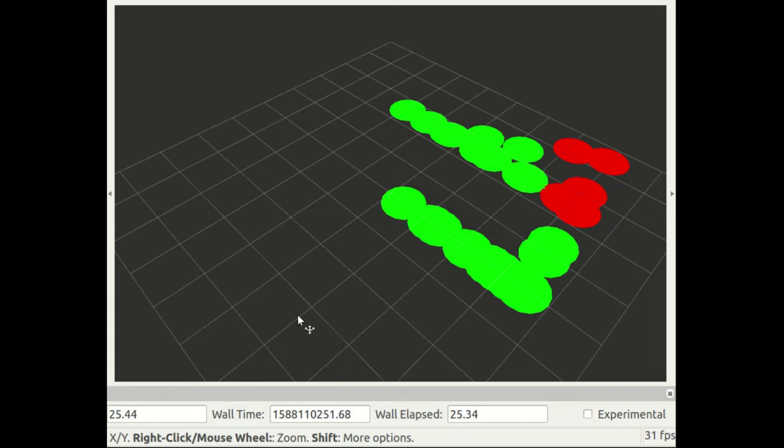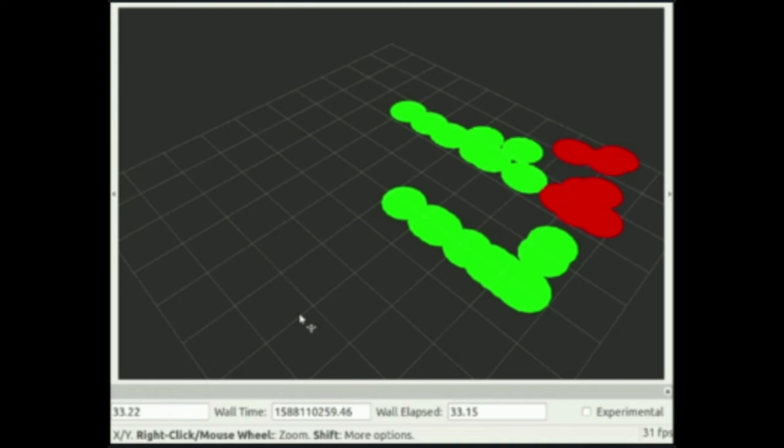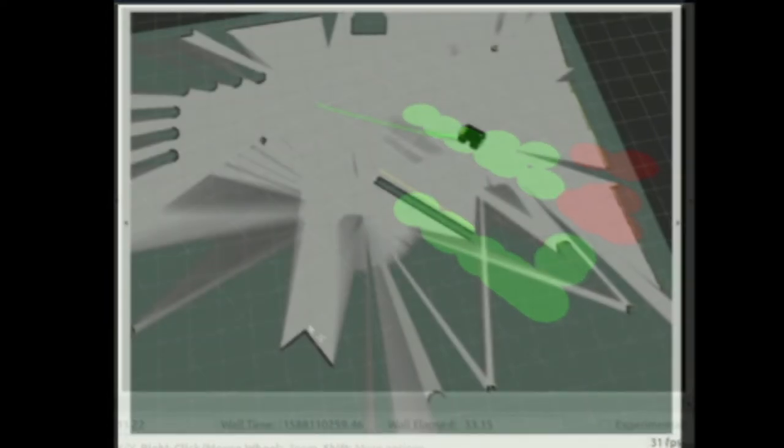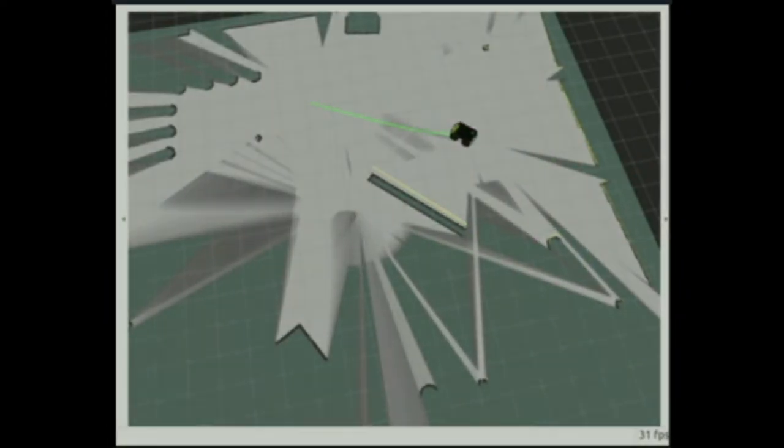In future implementations, real data would be used according to Radbot's X-Y coordinates and data from the radiation sensors. This heat map is expected to be joined with the Cartographer map to form a single, complete picture for the Radbot operators.